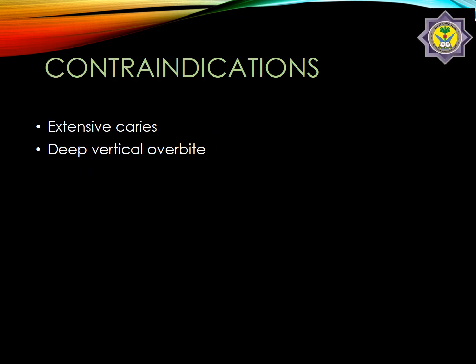Now, are there any contraindications? Yes. In case of extensive caries — since there is extensive caries on the abutment teeth and enamel is already lost, a large part of the enamel is gone so I can't use it in these cases. Also, in case of deep vertical overbite, so much enamel must be removed from the lingual surface of the maxillary incisors in this occlusal relationship.